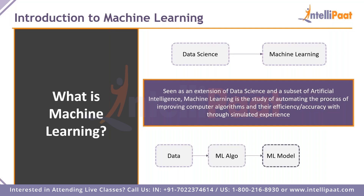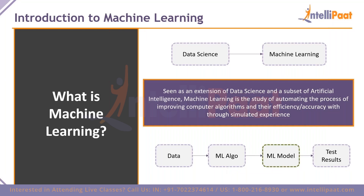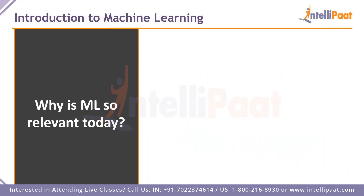You get your test results and check your ML model for accuracy — how accurate your predicting algorithm is. If the accuracy is not satisfactory, you put your insights back into the algorithm and adjust it. This process can be automated, and that is what artificial intelligence is. Once you receive the most accurate algorithm, you finalize your ML model and implement it in real-world scenarios, such as deploying it on an e-commerce website.